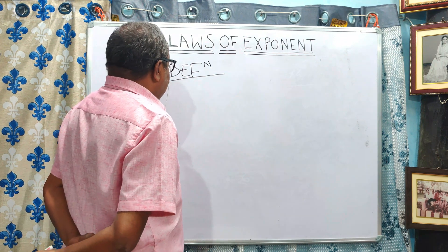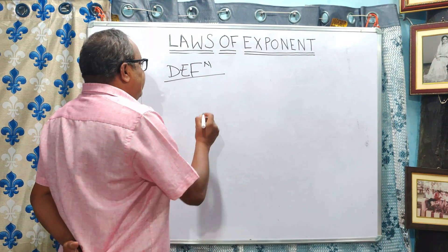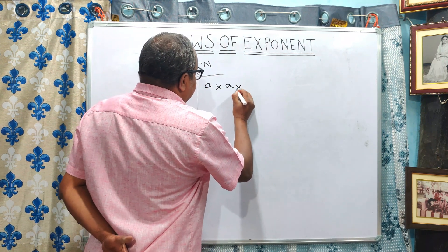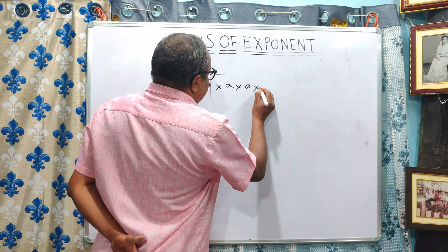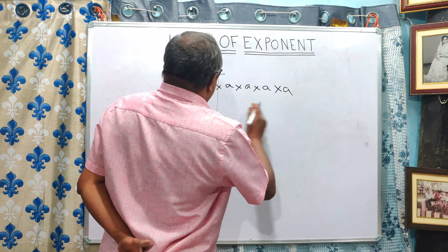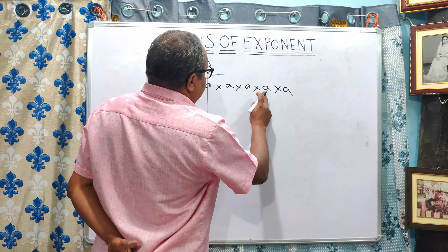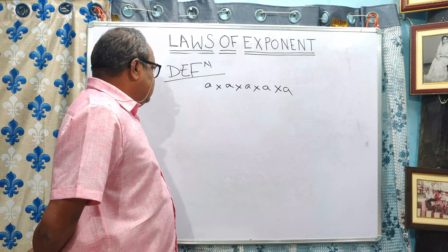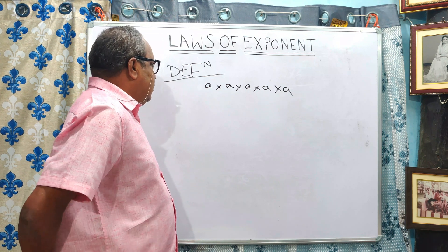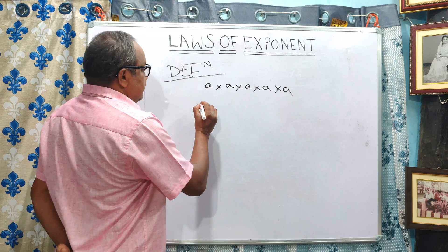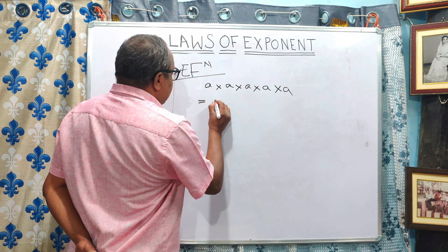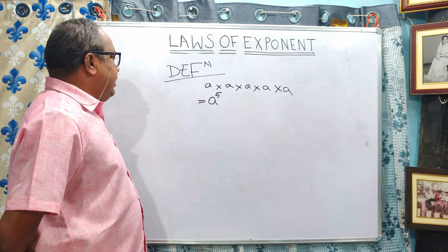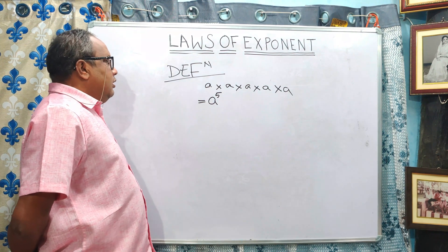The definition of exponents is where a number is multiplied by itself several times. Say A is a number — A multiplied by five times. We can write it in short form, that is A to the power five. This format is called exponent.